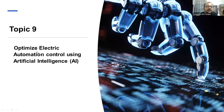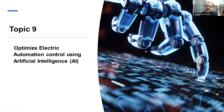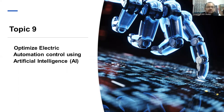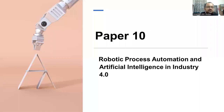Topic number nine is optimized electric automation control using artificial intelligence. How artificial intelligence impacts electrical automation — that you can give a detailed seminar on.